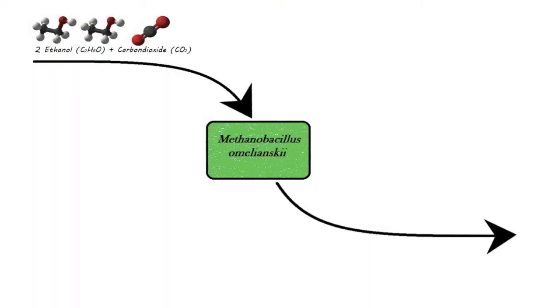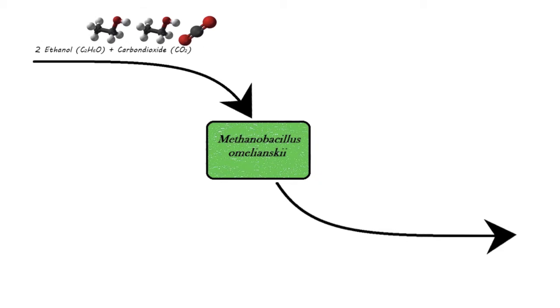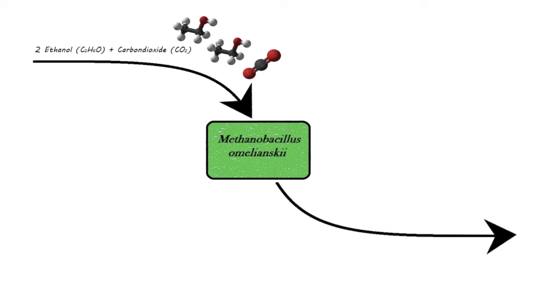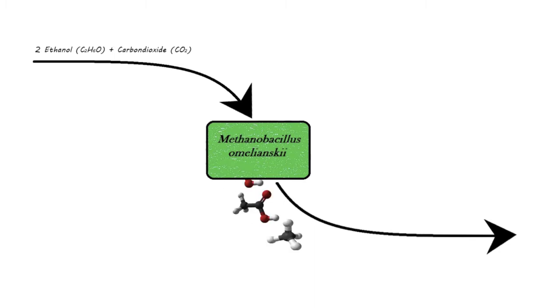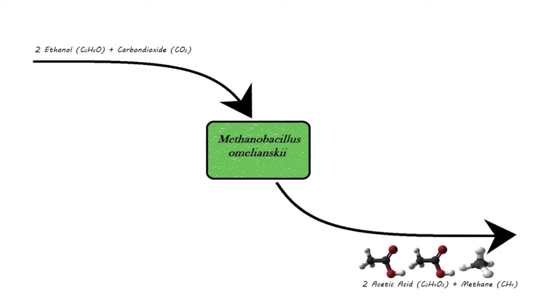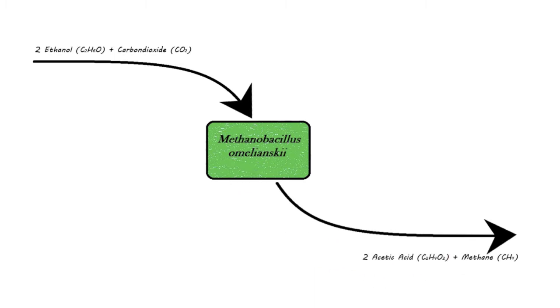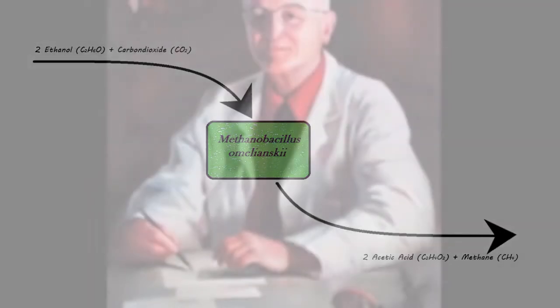So what reaction did the Omeliansky bacterium carry out? The substrates were ethanol and carbon dioxide. It was a methanogenic bacterium, so methane, also called biogas, was produced together with acetic acid.